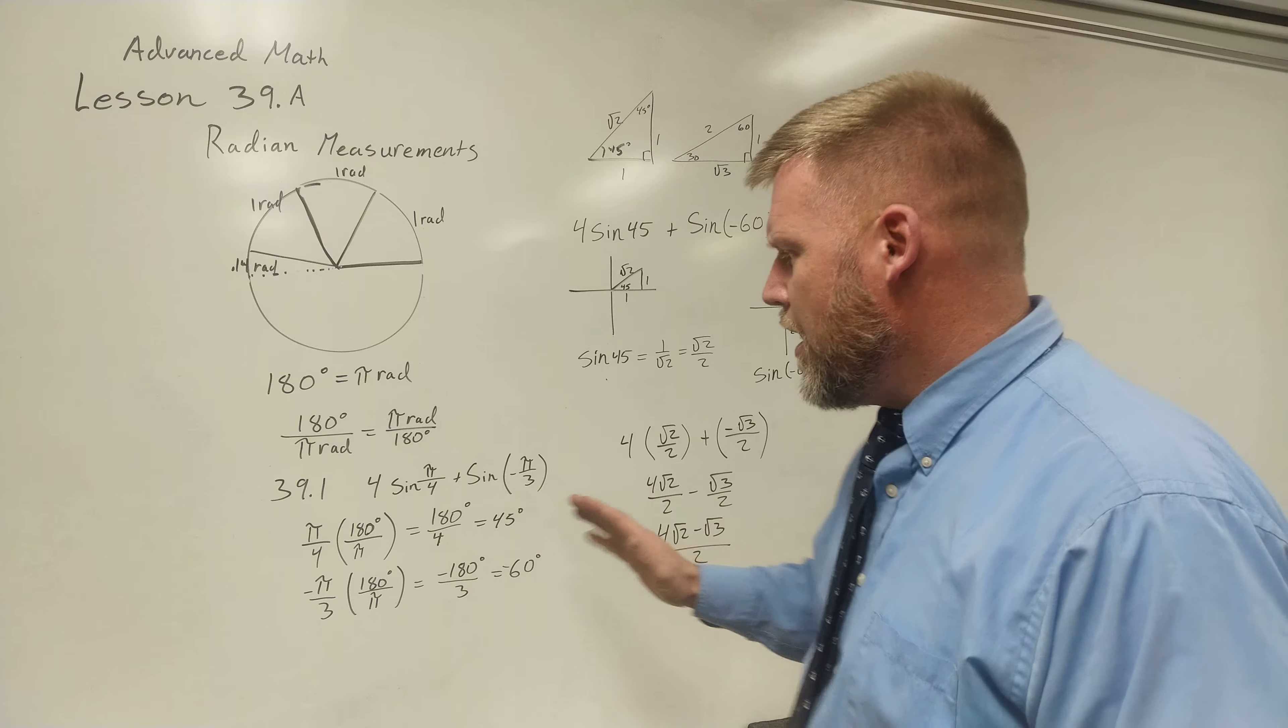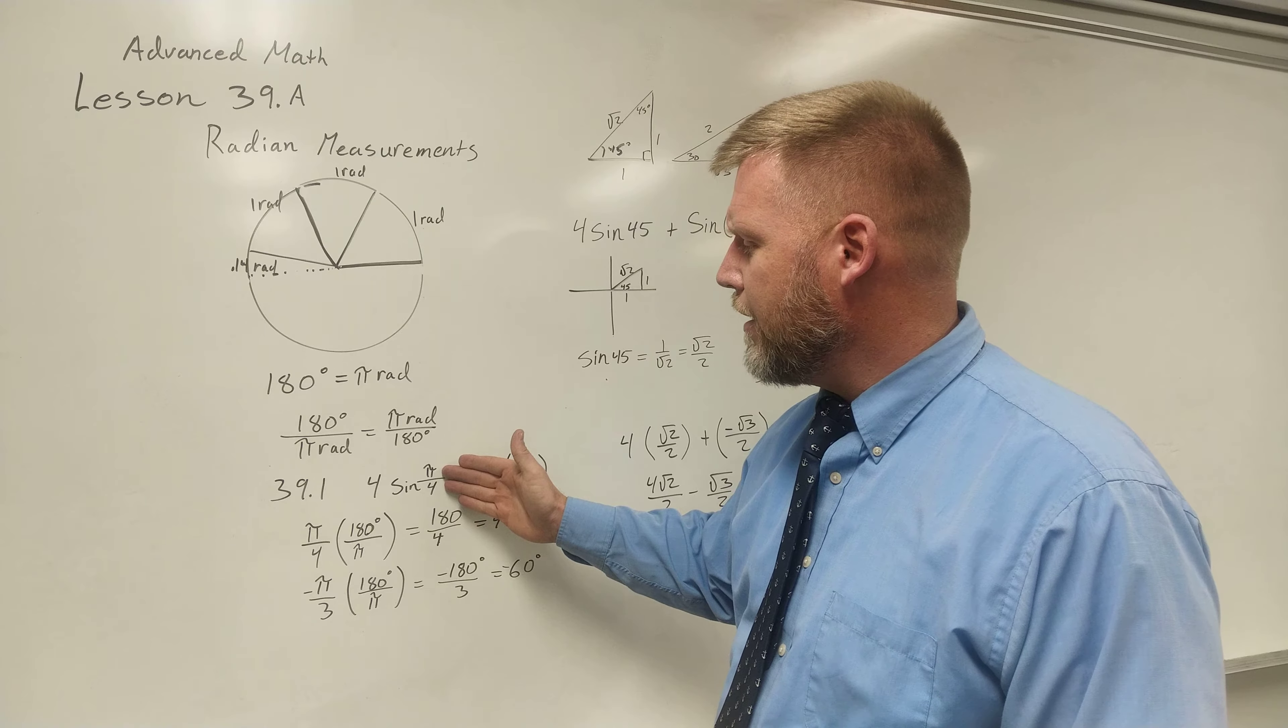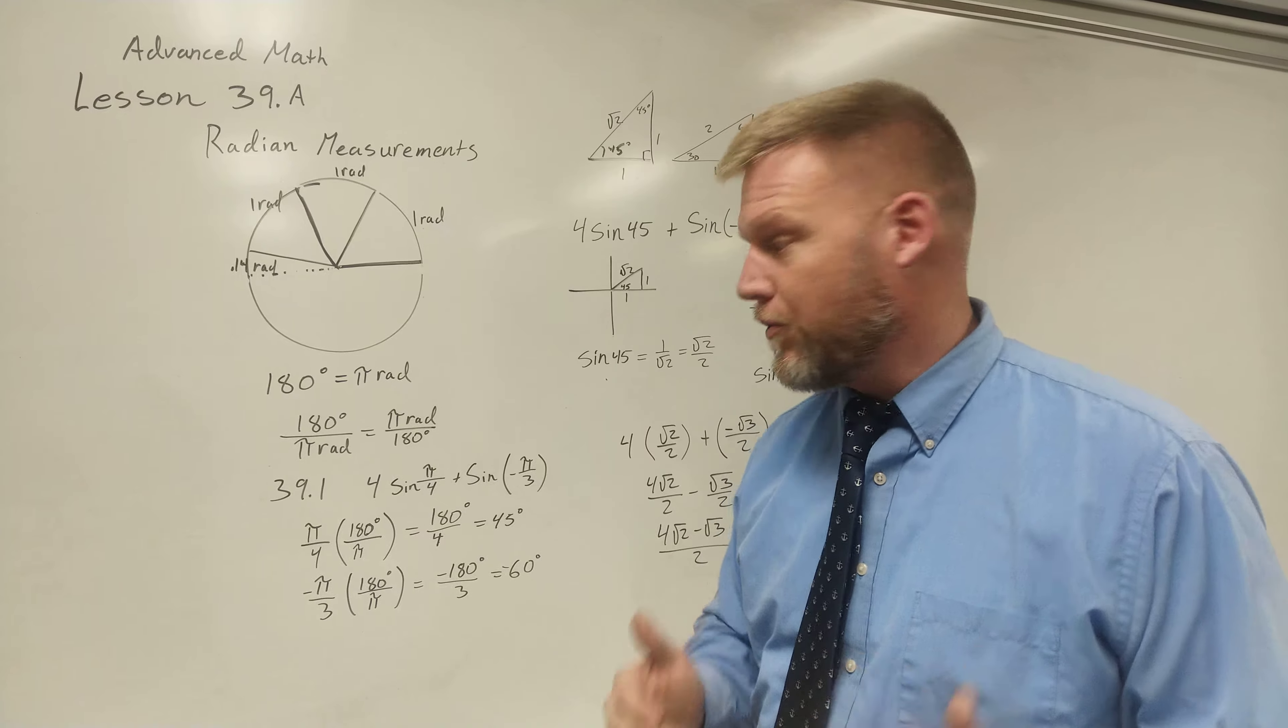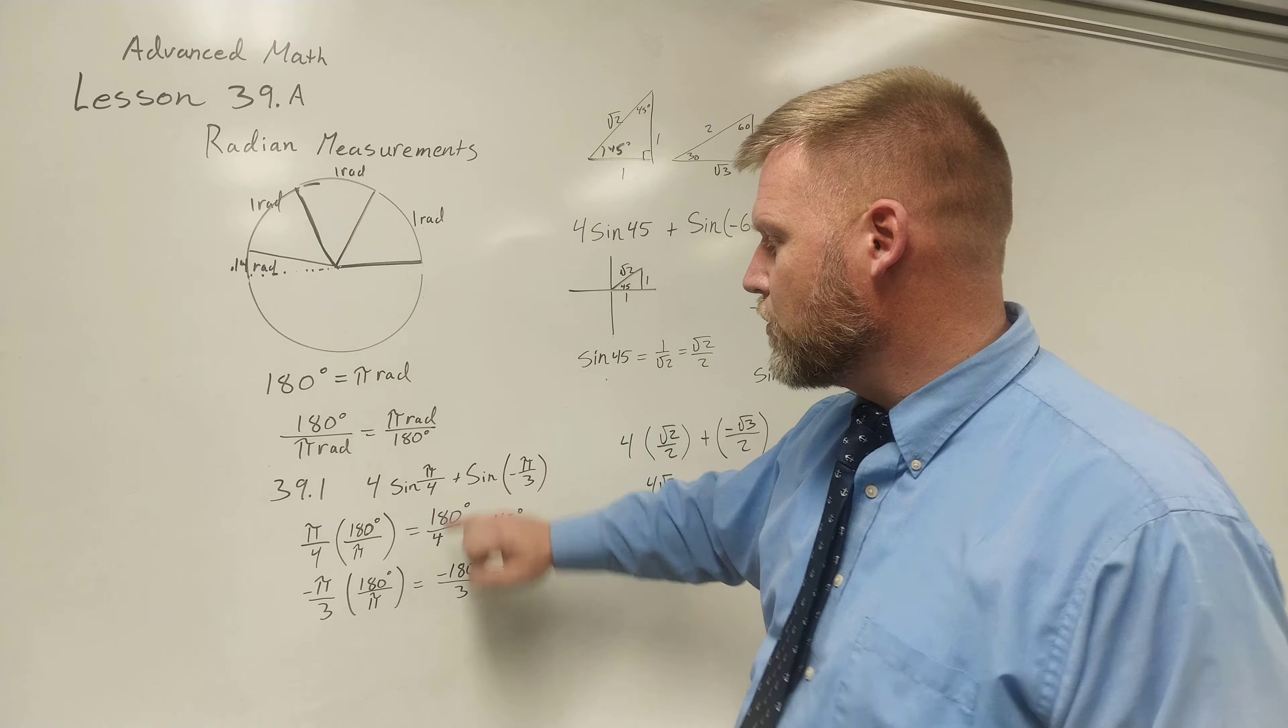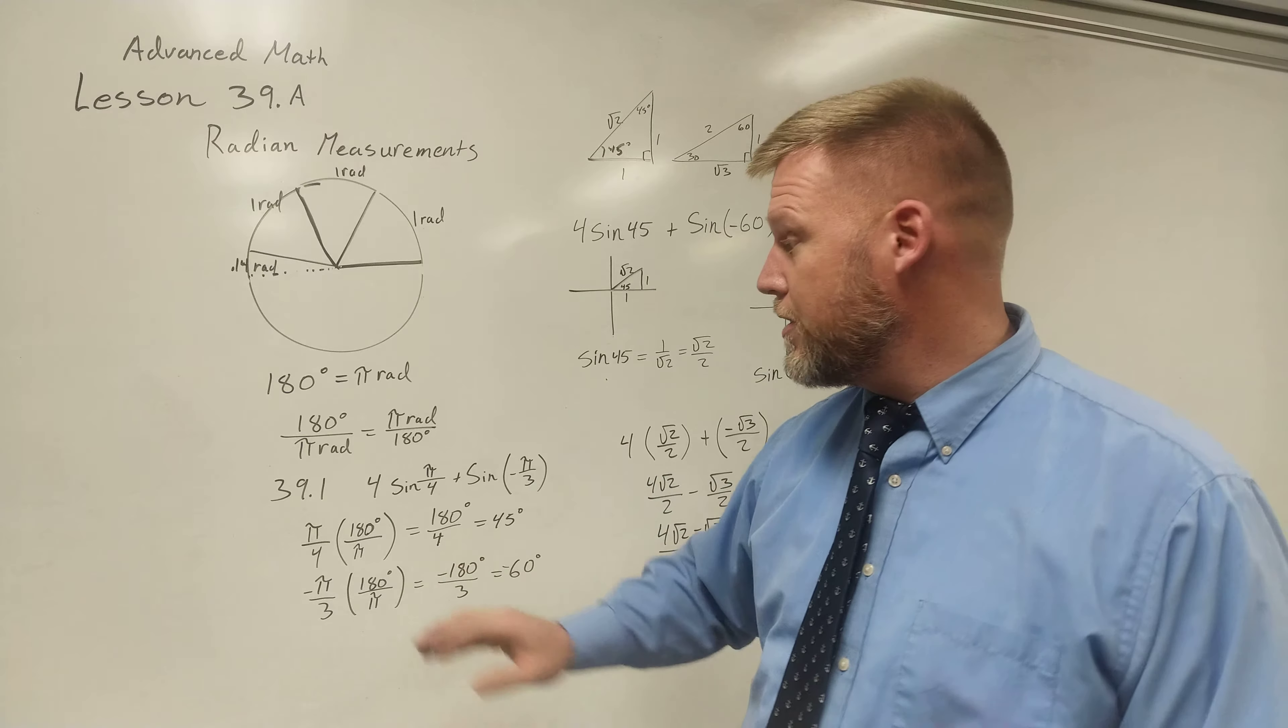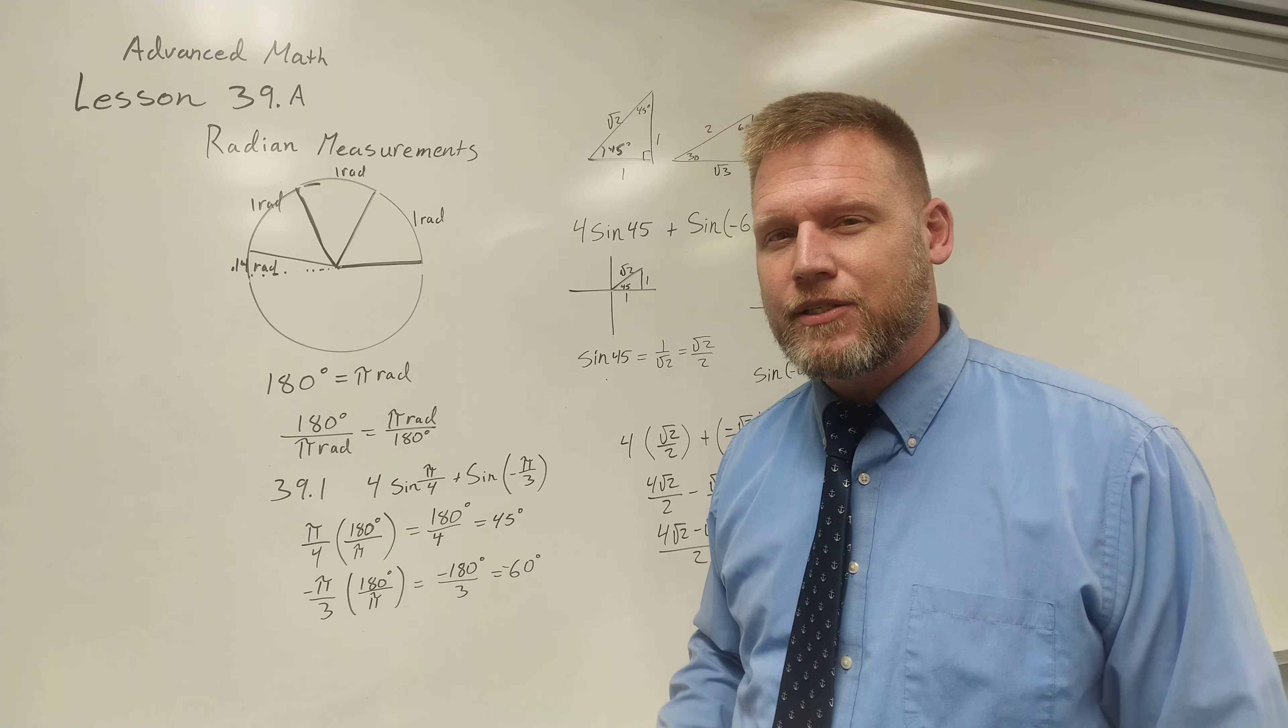If I can take this and say π/4, how can I relate that into degrees? Because I already know my special triangles with degrees. So π/4 times 180/π. And I chose to use the 180/π instead of the π/180 because I want my π's to cancel. If I do π over π, I end up with 180/4. 180 over 4 is 45 degrees.